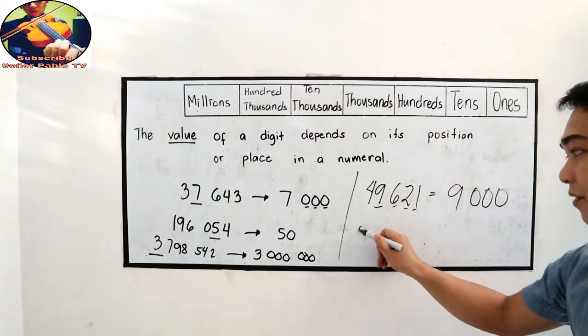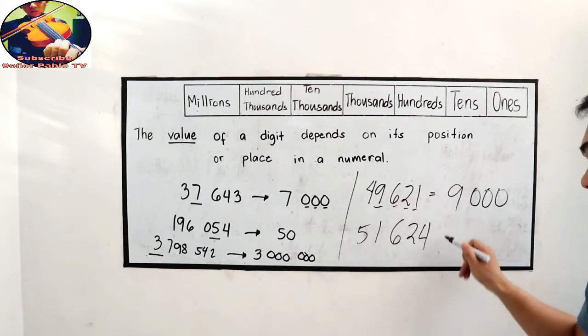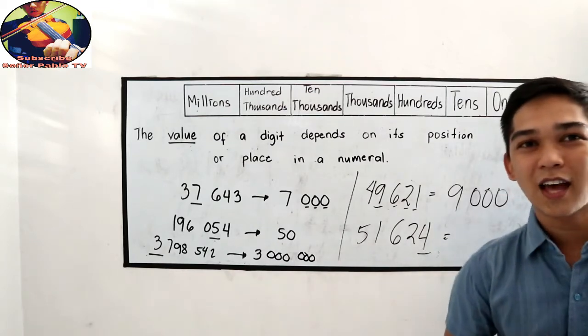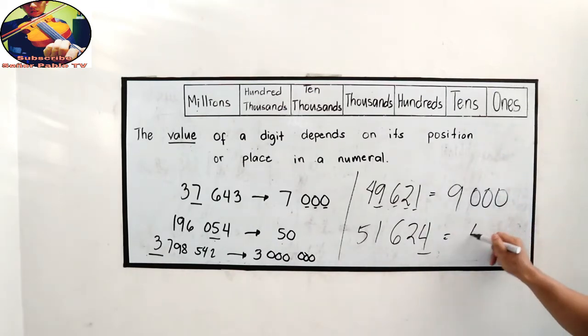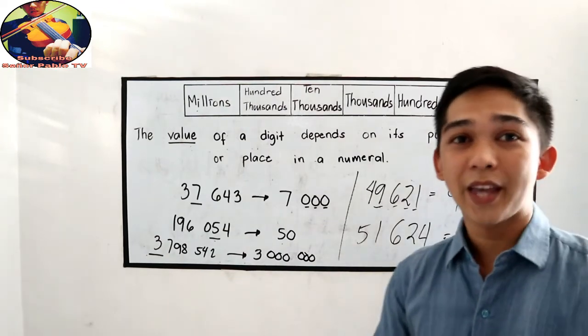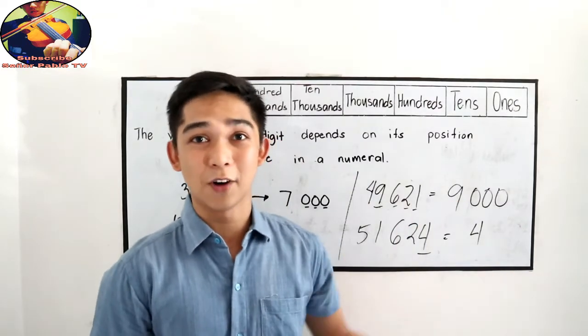Let's say I have 51,624. The underlined number is 4. So that is in the ones place. So the value is 4. So that is on how to get the value of the number in our place value.